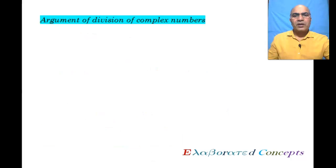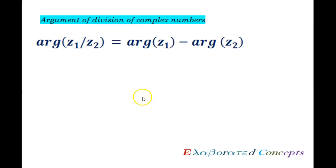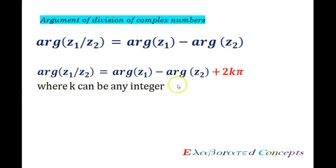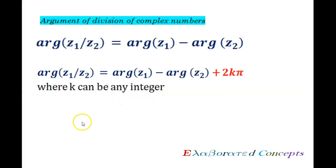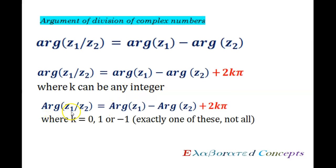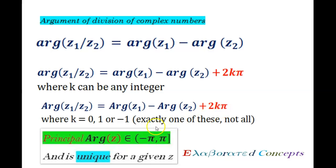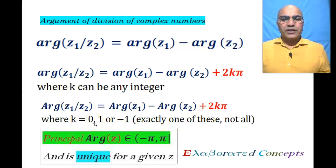The same is the case for argument of division of a complex number. Argument of z1 upon z2 is equal to argument of z1 minus argument of z2, and the general case is argument of z1 upon z2 equals argument of z1 minus argument of z2 plus 2kπ, where k can be any integer. The principal argument of z1 upon z2 equals principal argument of z1 minus principal argument of z2 plus 2kπ, where k is exactly one of 0, 1, or minus 1.